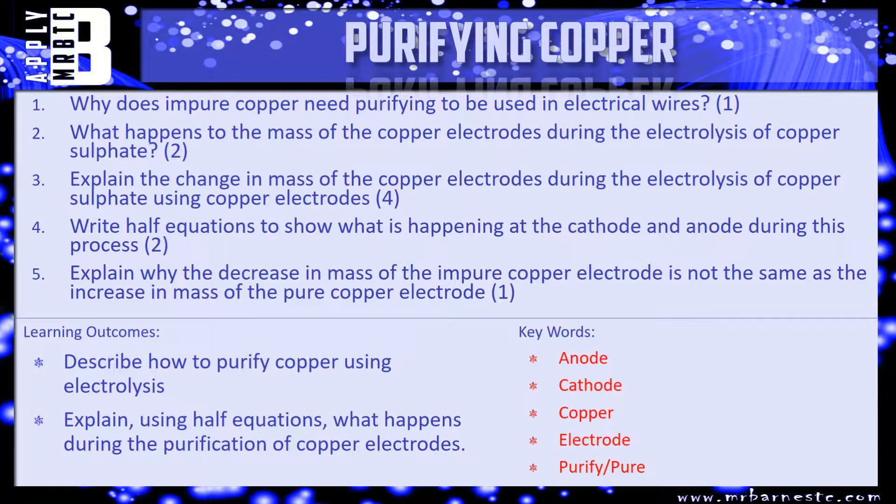Number three, explain the change in mass of the copper electrodes during the electrolysis of copper sulfate using those copper electrodes. So talk about what happens first, what happens to the electrons? Is it oxidation or reduction? Have it moving over to the pure electrode. What happens there?